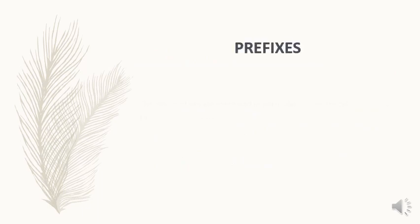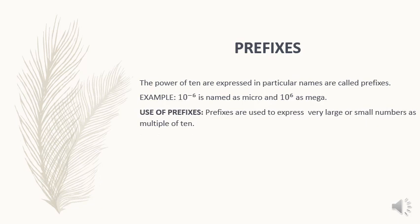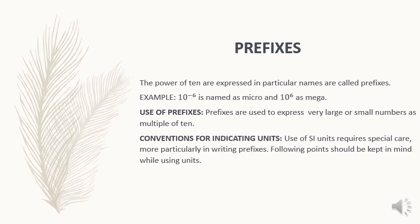Prefixes. The powers of 10 are expressed in particular names are called prefixes. For example, 10 raised to the power minus 6 is named as micro, and 10 raised to the power 6 is named as mega. Uses of prefixes: prefixes are used to express very large or very small numbers as multiples of 10.